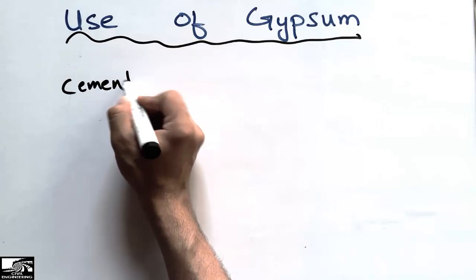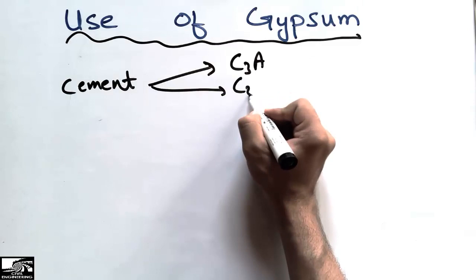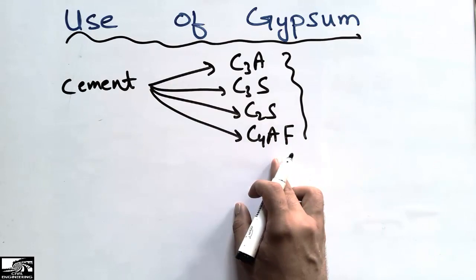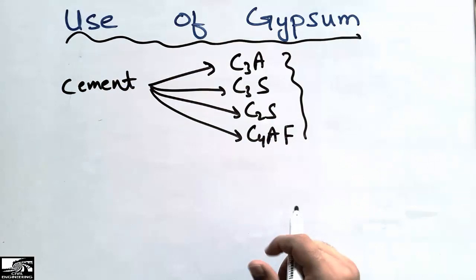The cement is made up of four main complexes. These are the tricalcium aluminate, the tricalcium silicate, the dicalcium silicate, and the tricalcium aluminiferite. These all components are in different percentages.